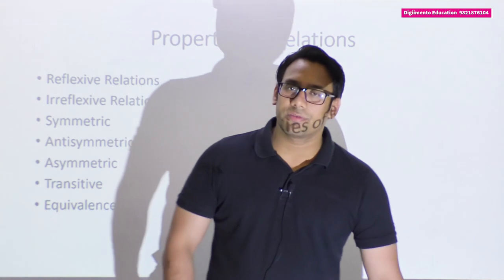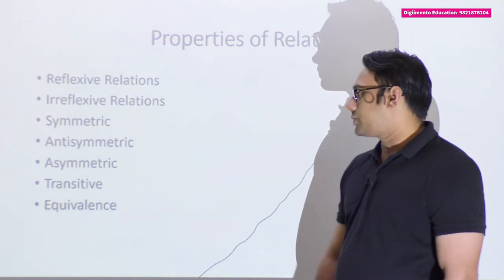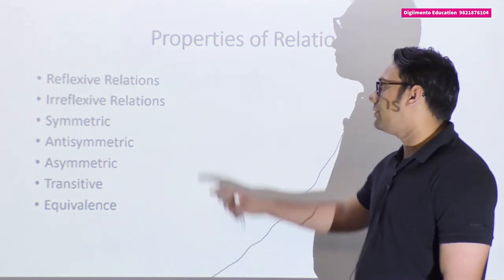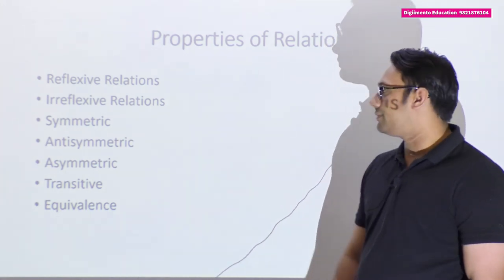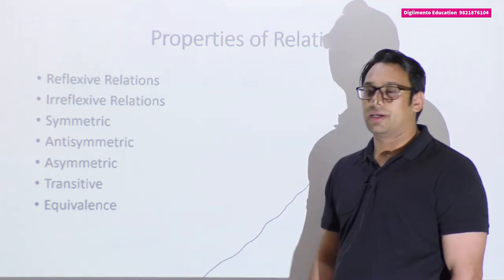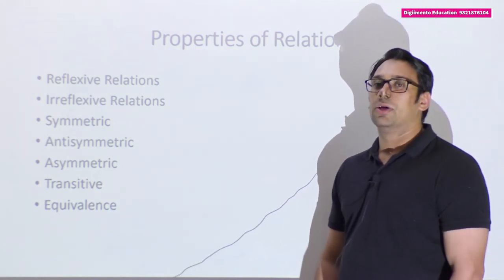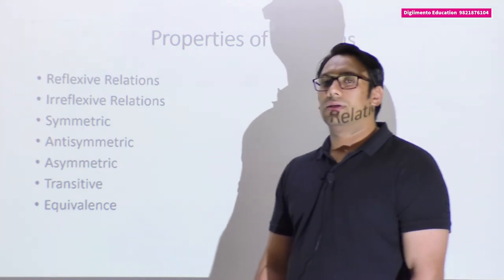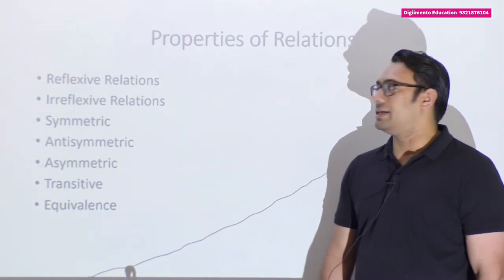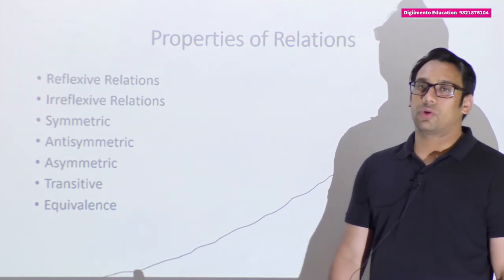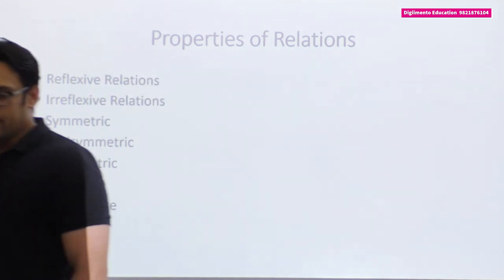In the previous class I gave you a brief introduction about relations. We have seen what relations are and what a reflexive relation is. There are different properties of relations: the first is reflexive, second is irreflexive, third is symmetric, fourth is anti-symmetric, fifth is asymmetric, sixth is transitive, seventh is equivalence, and the eighth is posets — partially ordered sets. After posets we will also discuss tosets — totally ordered sets. We will be having two sessions today: in the first session we will discuss all these properties of relations, and in the second session we will take questions and look at lattices.